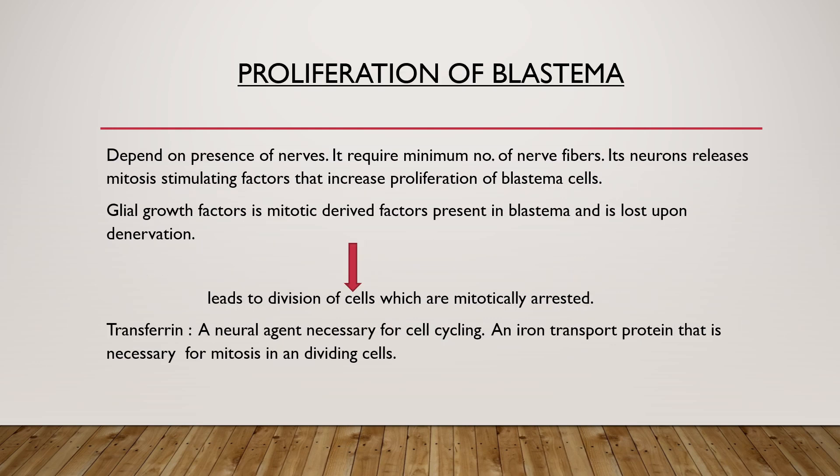Next is proliferation of the blastema. Proliferation means multiplication. Proliferation of blastema depends on the presence of nerves and requires a minimum number of nerve fibers. Neurons release mitosis-stimulating factors that increase proliferation of blastema cells. The glial growth factor is a mitotic-derived factor present in the blastema, and it is lost upon denervation, which leads to arrest of cell division. Next is transferrin — it is the neural agent necessary for cell cycling and an iron transport protein necessary for mitosis in dividing cells.